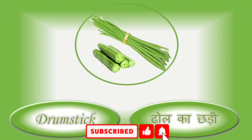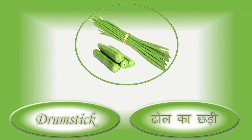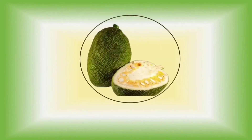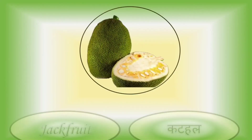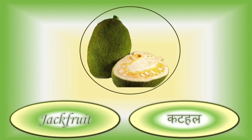Drumsticks — drumsticks means sehjan. Jackfruit — jackfruit means kathal.